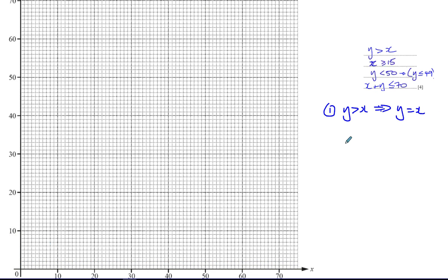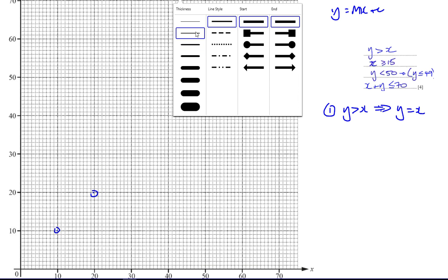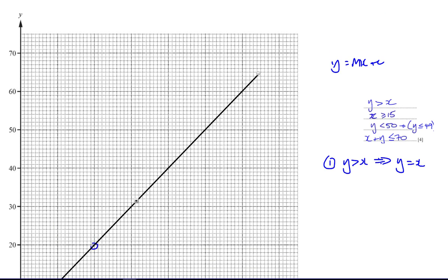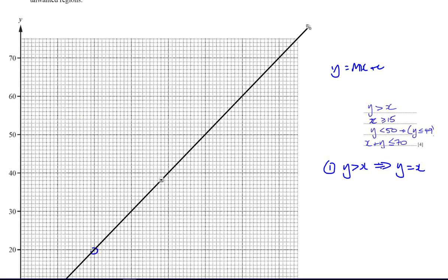Y = X is a pretty easy line to draw. Whatever X is, Y is the same number: when X is 0, Y is 0; when X is 10, Y is 10; when X is 20, Y is 20. You can also think of it as Y = mx + c, where m is 1 and c is 0 — gradient of 1 and Y-intercept at 0. In these questions you have to be really accurate when drawing your graphs, because you want the lines to intersect at the right places. I'll draw that line now.